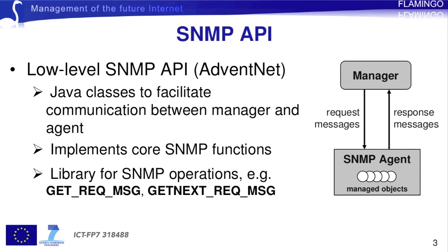For the SNMP application programming interface, we will be using the one developed by AdventNet. The API provides a set of Java classes that facilitate the communication between the manager and an agent. It implements the core SNMP operations and provides a library of these operations for the user. Two types of this API are available: the low-level and the high-level API. The latter implements a wider range of functions, but for education purposes the low-level is recommended, which is the one we use here.